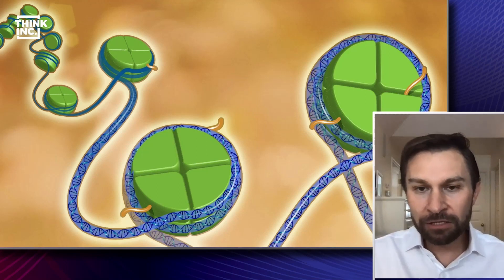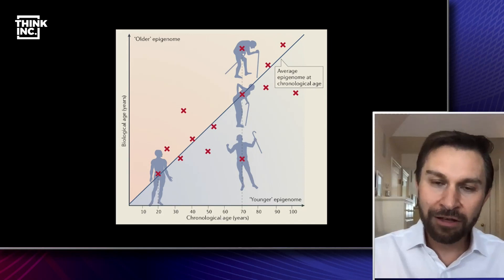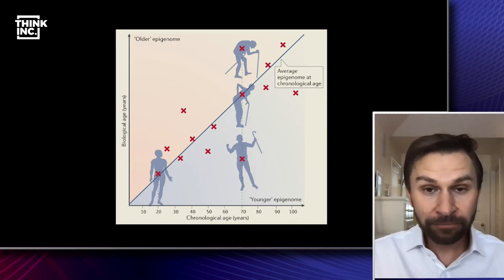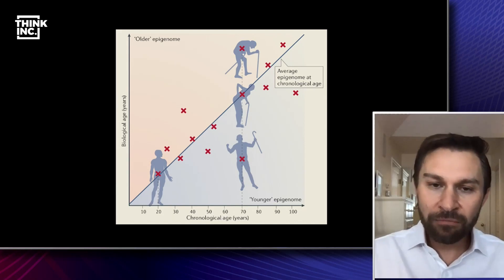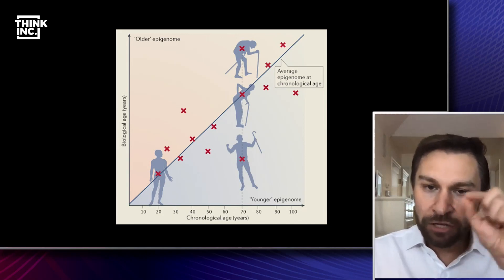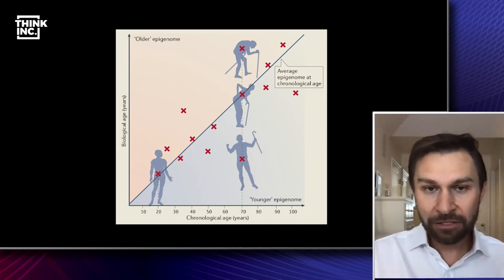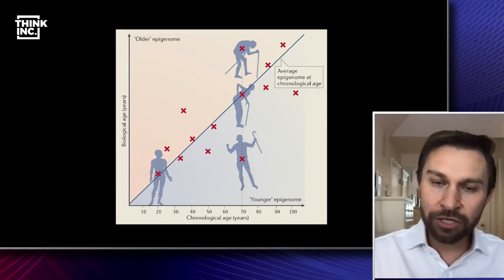And so in the next slide, what you'll see is that there's what's called the Horvath clock. So I have a really good friend at UCLA, University of California in Los Angeles. And Steve, Professor Steve Horvath, has discovered, along with his colleagues, that if you measure those chemical tags that attach to the DNA, these methyls, the so-called methyls, you can read them all, and then you can build a clock. And that's how I can tell how old you are biologically.